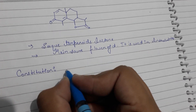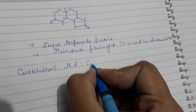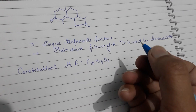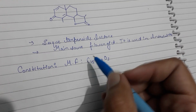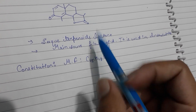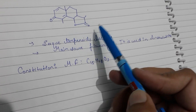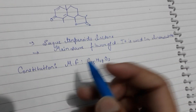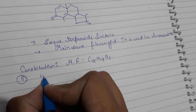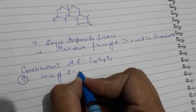The molecular formula of Centonin is C15H18O3, with 15 carbons, 18 hydrogens, and 3 oxygens. The second point regarding its constitution is the presence of 2 double bonds.